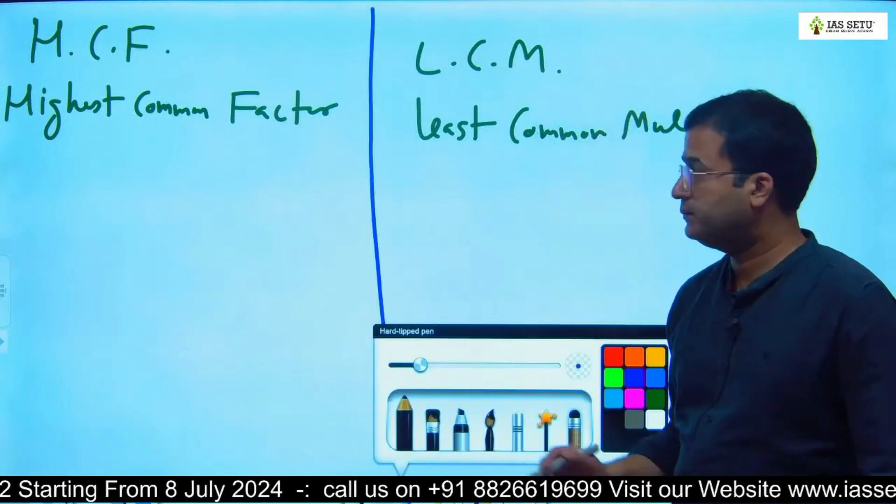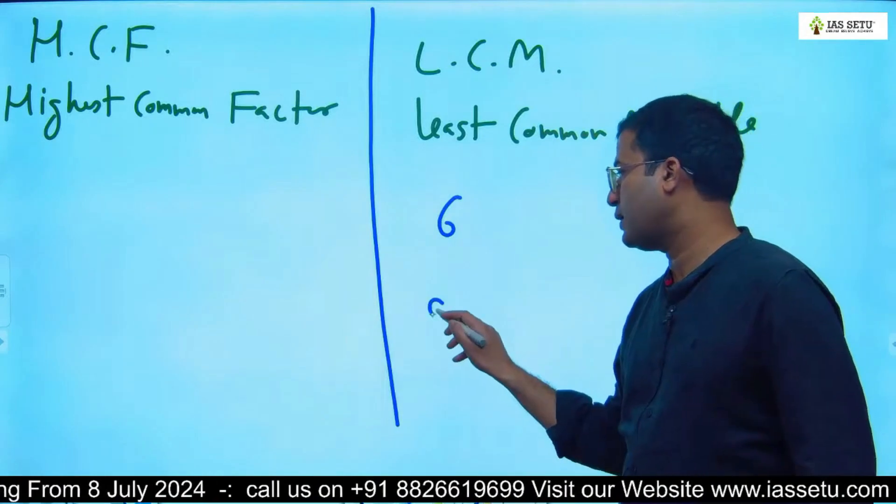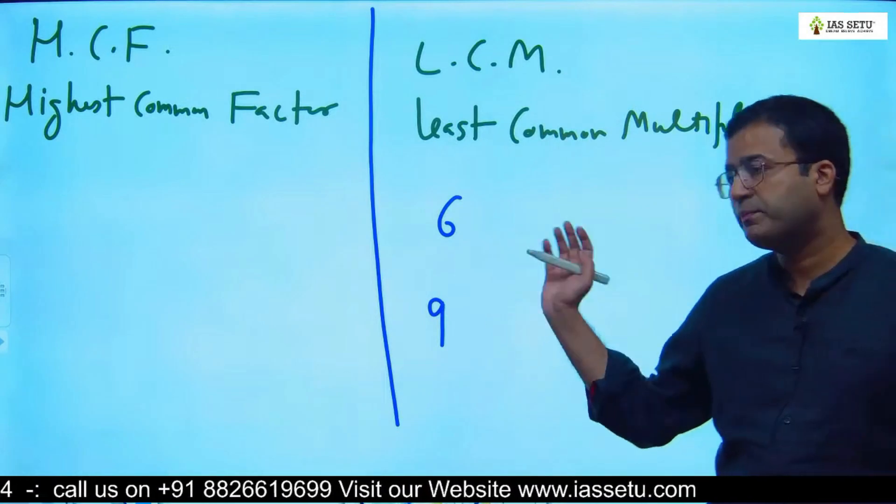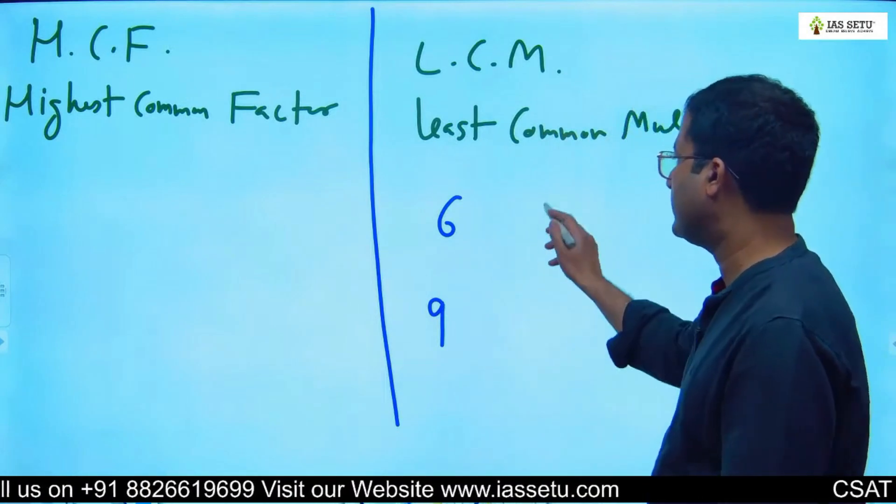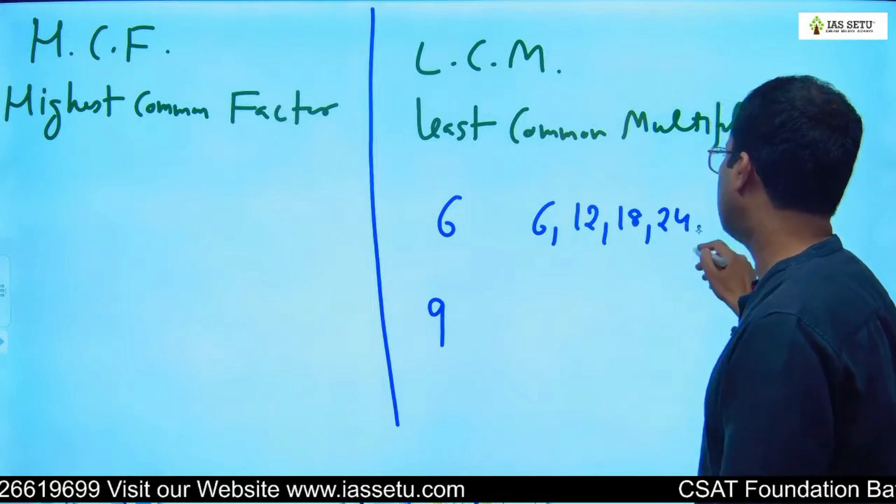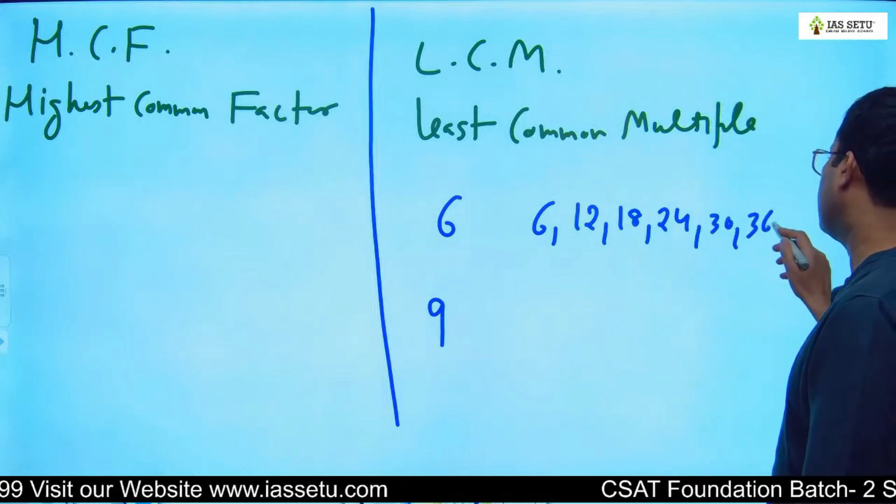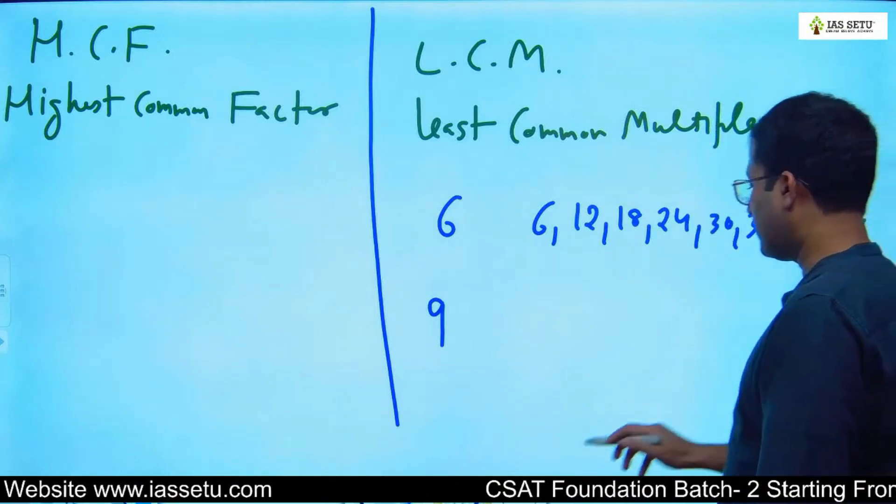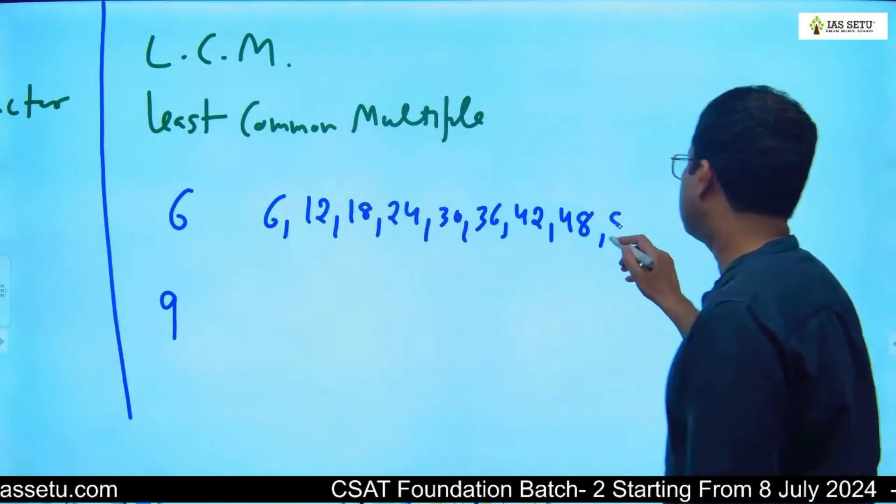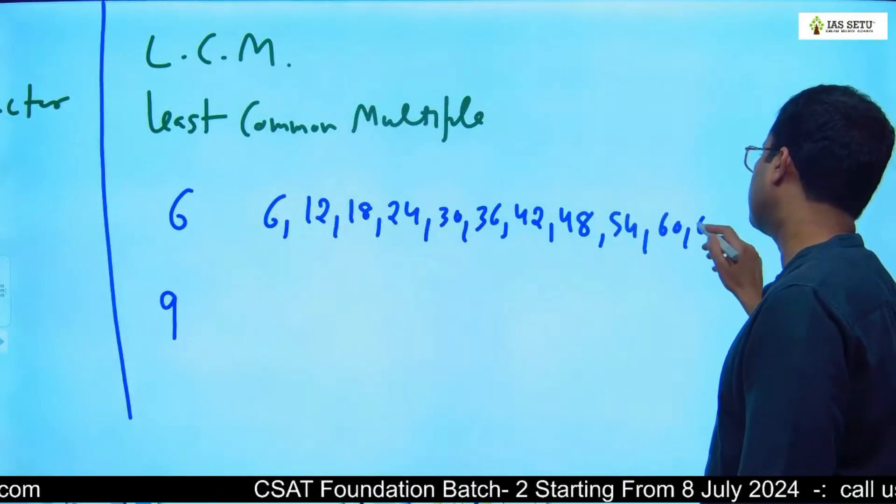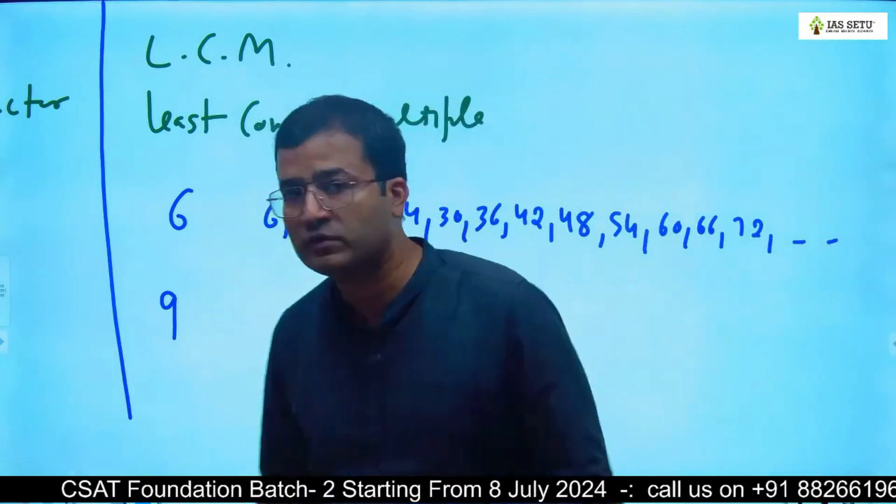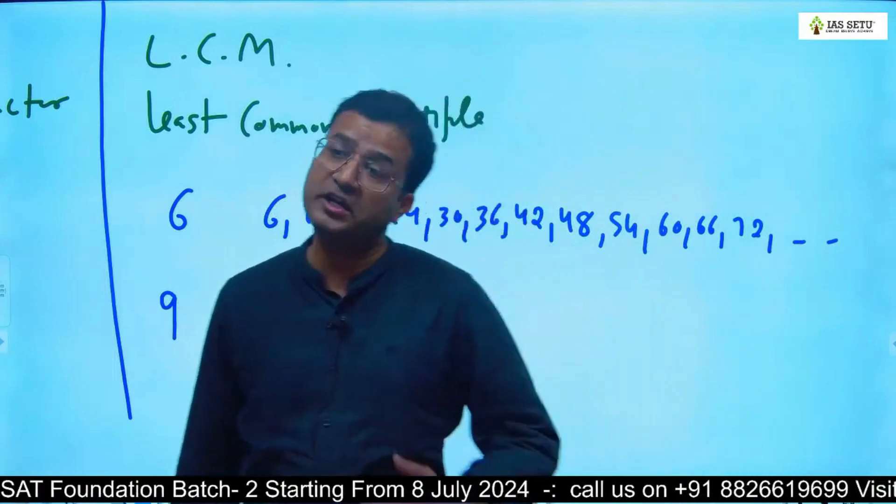I'll take an example. I take number 6 and now we will see multiples of 6. What are multiples of 6? 6, 12, 18, 24, 30, 36, 42, 48, 54, 60, 66, 72...